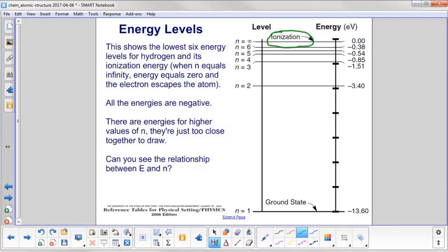All of the energies are negative, which means you have a bound system. The electrons stay orbiting the nucleus. There are energies for higher values of n, but they're just too close together to draw. Can you see the relationship between energy and n?